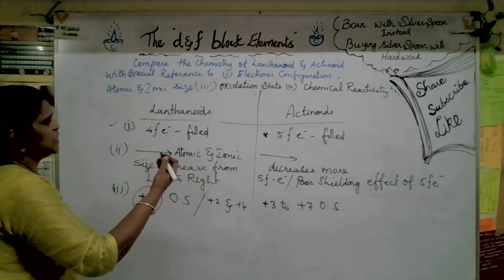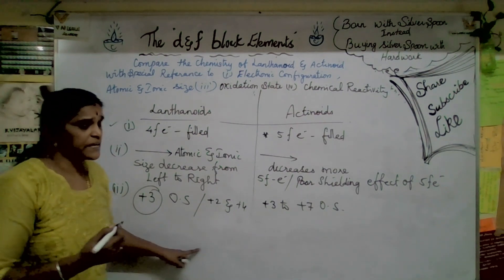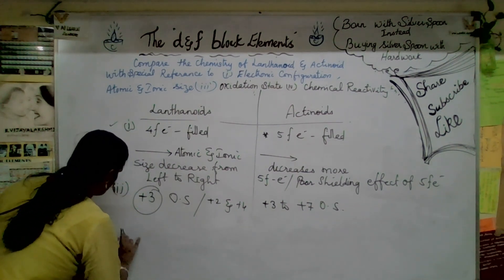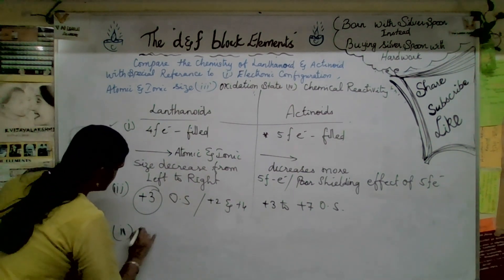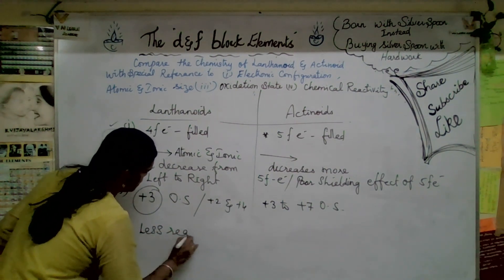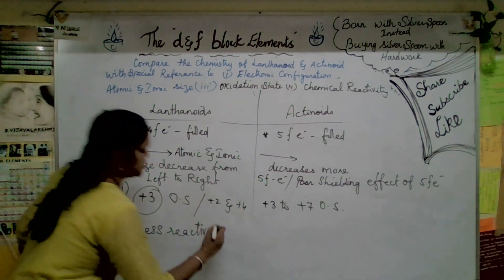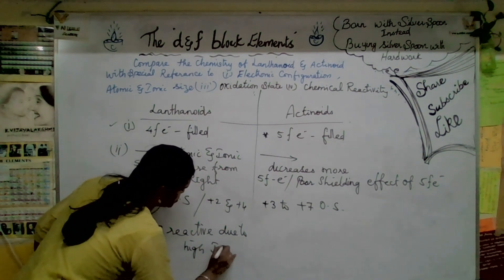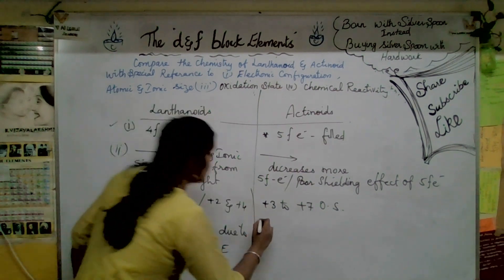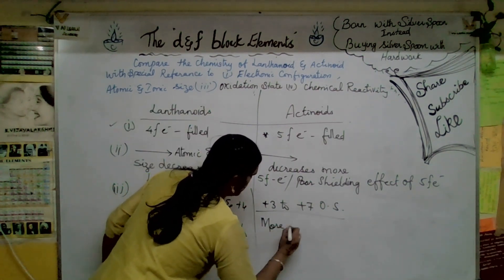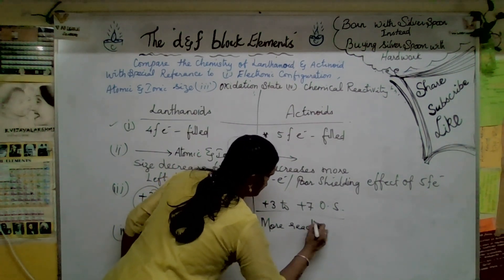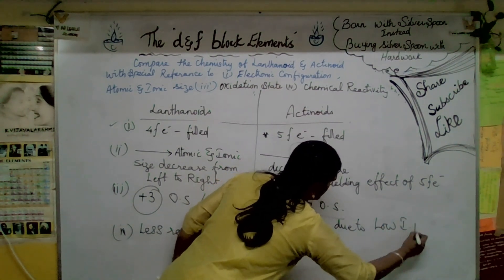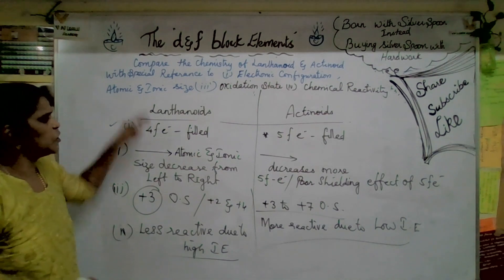Chemical reactivity: lanthanoids are less reactive due to high ionization energy. Whereas actinoids are more reactive due to low ionization energy. Hope you got a better idea about all these points comparing lanthanoids and actinoids.